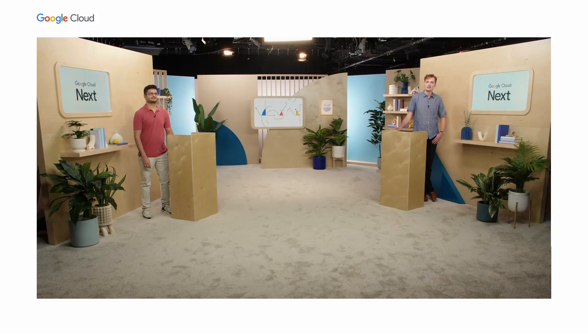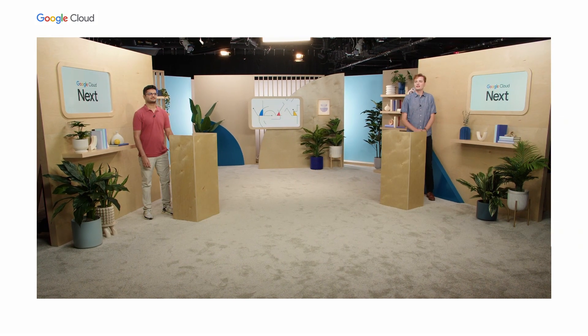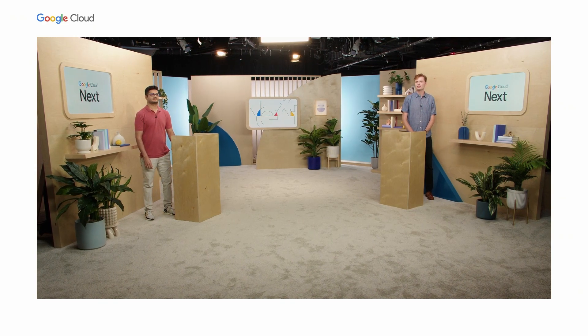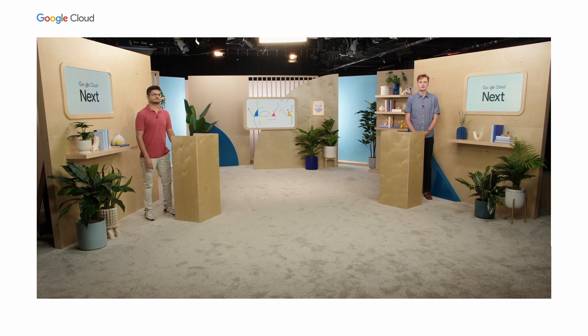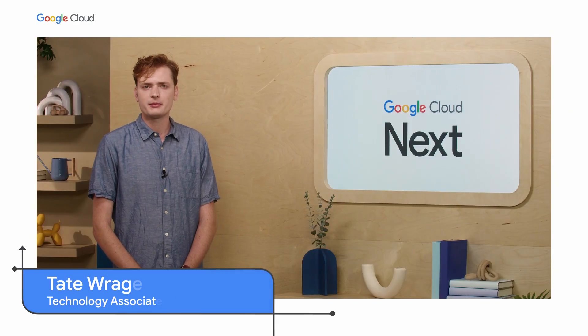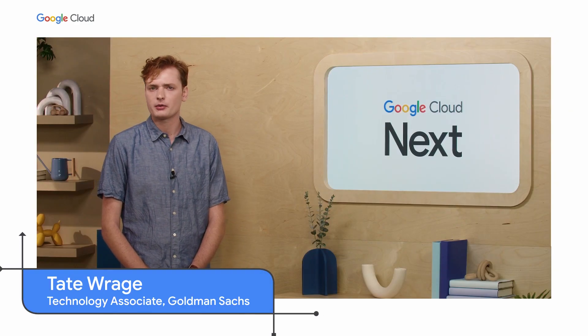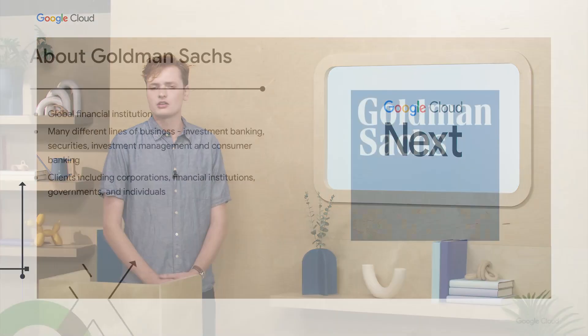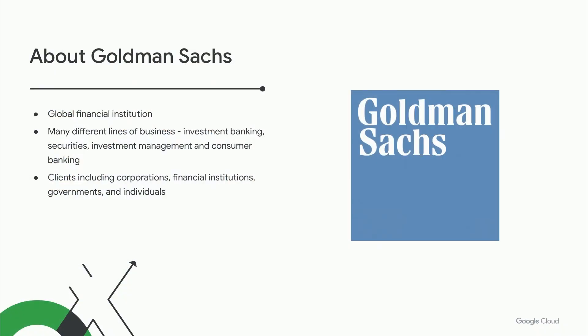Goldman Sachs has been an incredible partner working together to build our roadmap for security and the vision for security. Thanks, Akshay. We agree that it's been a great partnership — our account team as well as the product teams we've worked with over at Google have been instrumental in our GCP journey. My name is Tate Reggie and I'm a member of the cloud enablement team at Goldman Sachs. Goldman Sachs is a major global financial institution that provides a broad range of financial services to a wide variety of clients.